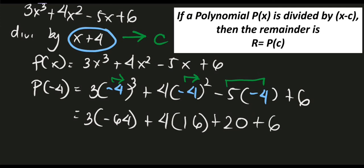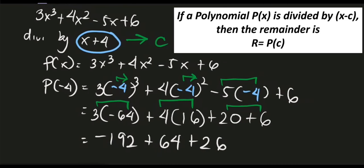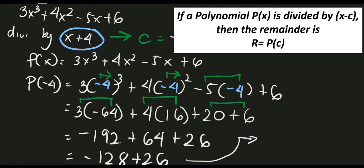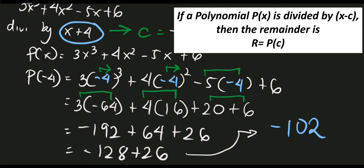Combining the terms: negative 192 plus 64 equals negative 128. Then 20 plus 6 equals 26. Finally, negative 128 plus 26 equals negative 102. So the remainder when dividing this polynomial by 2x plus 4 is negative 102. That is our final answer using the remainder theorem.